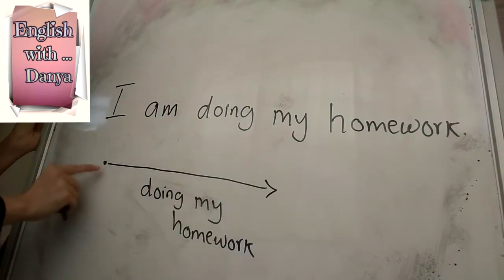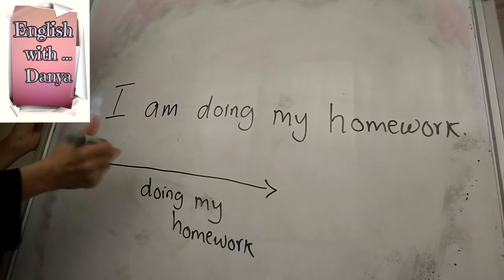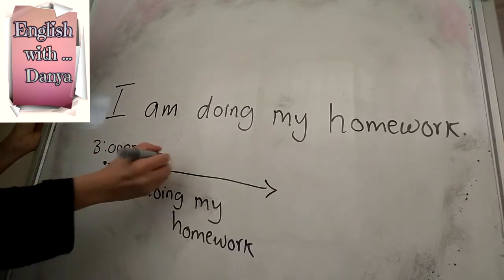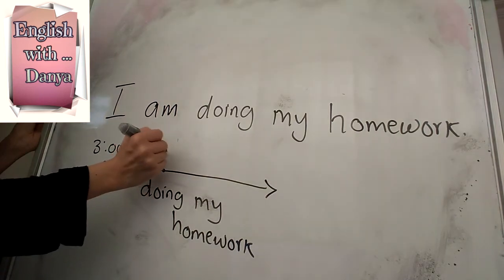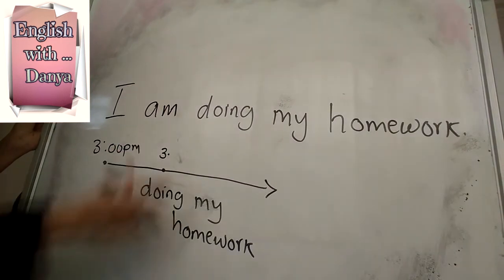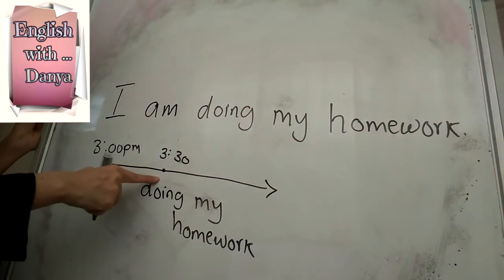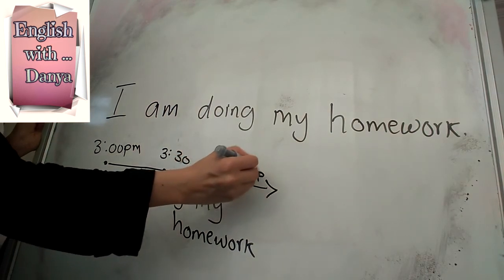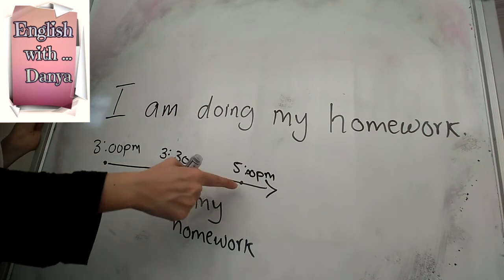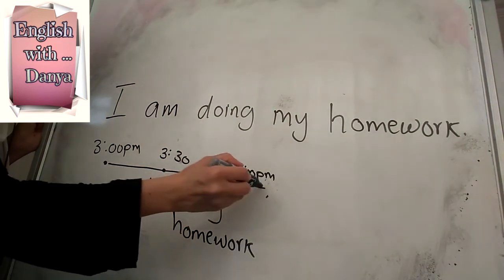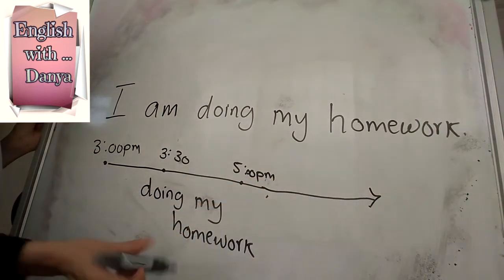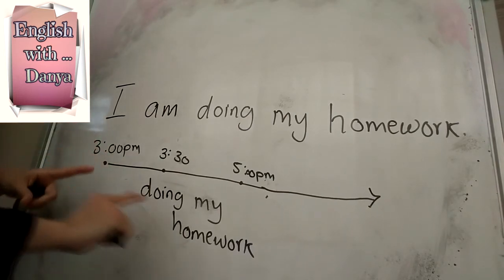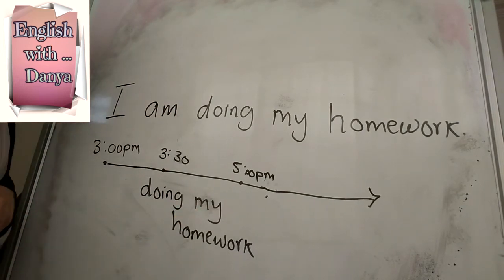For example, I started doing my homework at 3 p.m. in the afternoon. Now it is 3:30 p.m. and I am still doing my homework. Maybe now it is 5 p.m. and I am still working on it. So 'I am doing my homework' means I started at 3 p.m. and it is still going on.